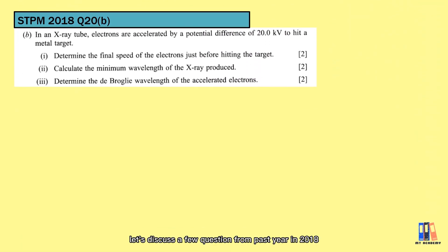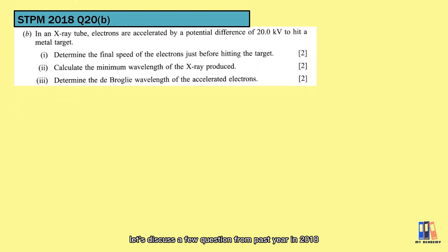Before we move on, let's discuss a few questions from past year in 2018. We are given a potential difference of 20 kV to produce X-ray. Now, the question doesn't mention about energy loss, so usually we just consider it as 100% energy conversion unless we are given certain information about it. We'll just quickly go through the question.